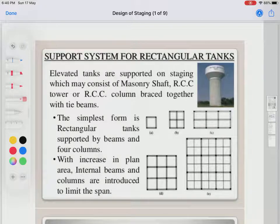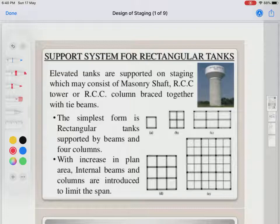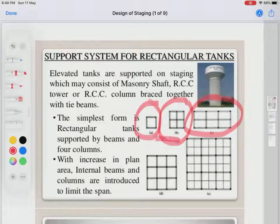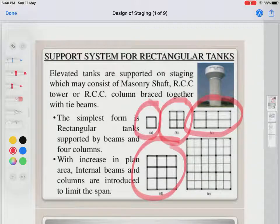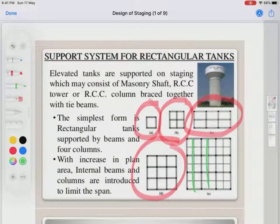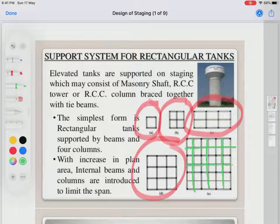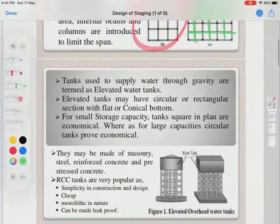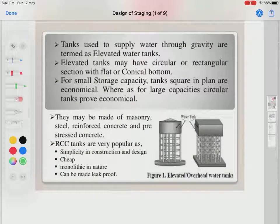The simplest form of rectangular tank is supported by beams and four columns. If the design area or load is increased, we can add more columns. If there is further increase in plan area, we can increase the number of internal beams and columns, introducing extra tie beams inside the plan. This makes our staging much more efficient, powerful, and flexible—not rigid.